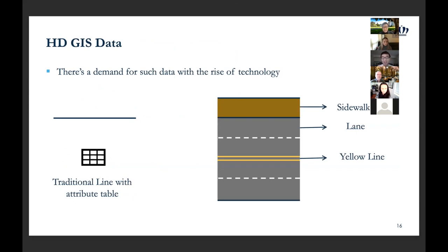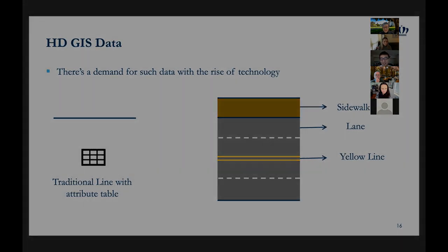To conclude, I think nowadays we need more information — high-resolution maps like this. The traditional map is just a line, but nowadays we need multiple layers of detail. That's it, thank you.